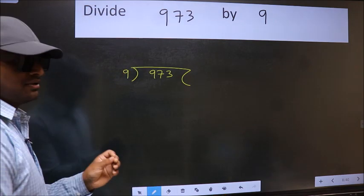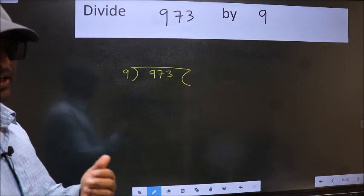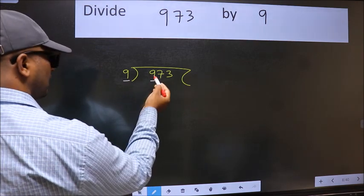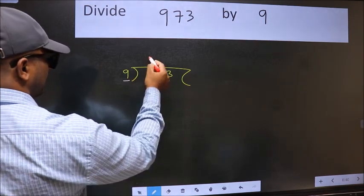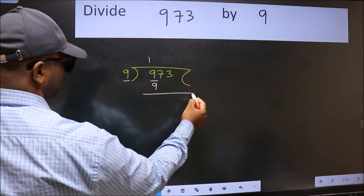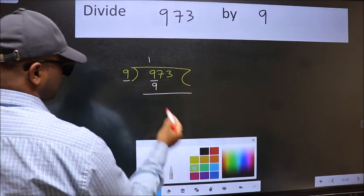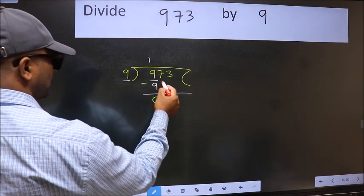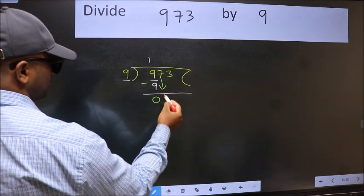This is step one. Here we have 9 and here 9. When do we get 9 in the 9 times table? 9 times 1 is 9. Now we subtract and get 0. After this, bring down the beside number, so bring down 7.